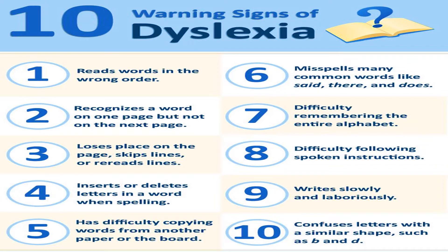Number one: the child reads words in the wrong order. Number two: recognizes a word on one page but not on the next — for example, a child recognizes the word 'cat' on one page but cannot recognize the same word on page two. Number three: loses place on the page, skips lines, or re-reads the same line.